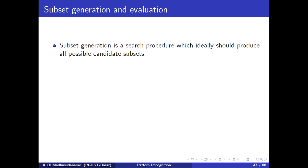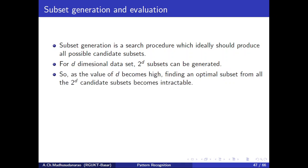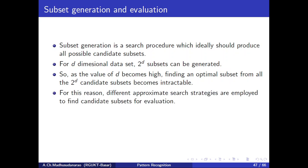Subset generation is a search process which ideally should produce all possible candidate subsets. For a D-dimensional dataset, 2^D subsets can be generated. As the value of D becomes high, finding an optimal subset from all 2^D candidate subsets becomes intractable. Suppose D equals 100: then 2^D is roughly 10^30, meaning you would need to evaluate that many subsets, which requires enormous computation. For this reason, different approximate strategies — for example, greedy search strategies — are employed to find candidate subsets for evaluation.